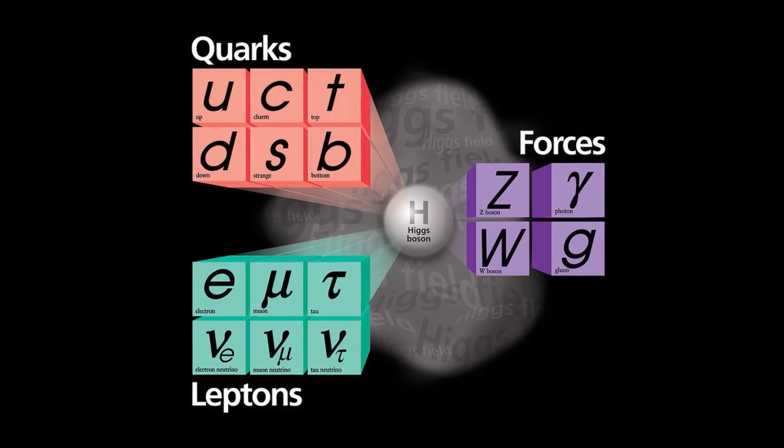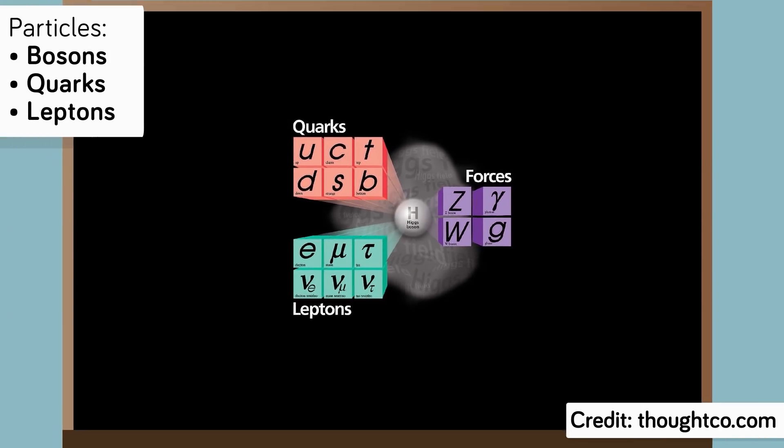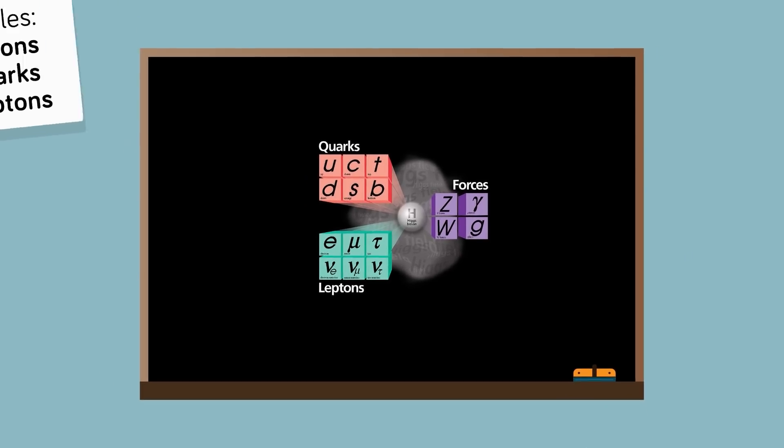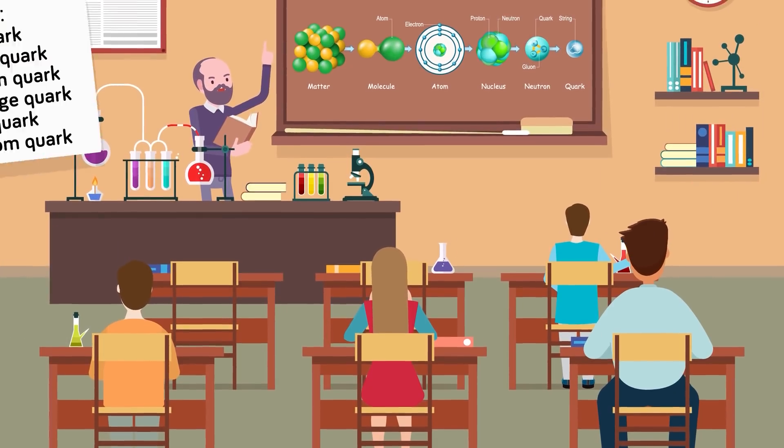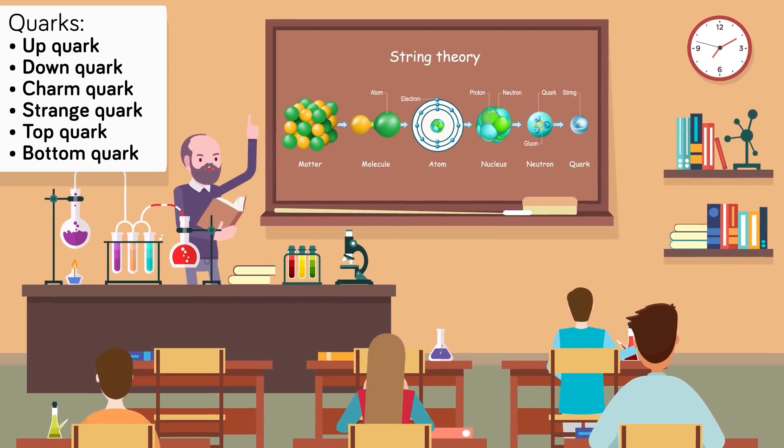The Standard Model also accounts for twelve different fundamental or elementary particles. These are divided into two groups: quarks and leptons. The quarks include the up quark, the down quark, the charm quark, strange quark, top quark, and bottom quark.